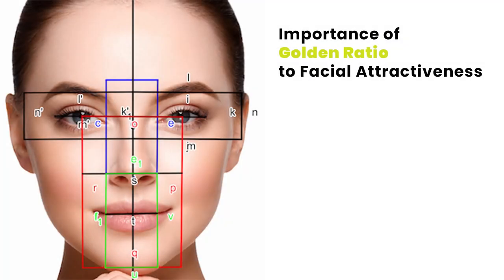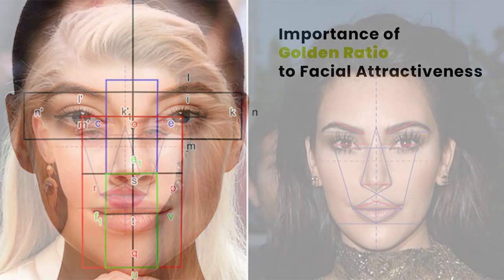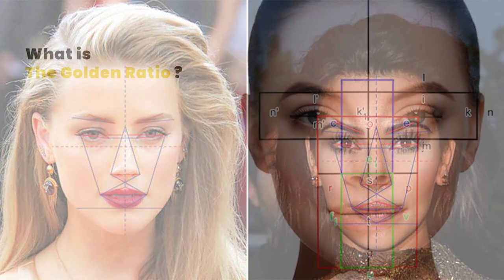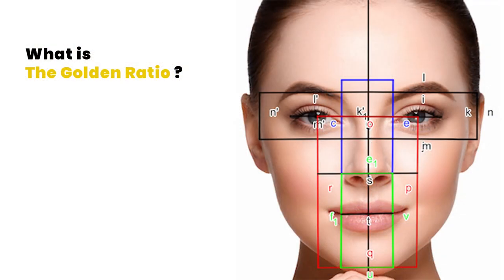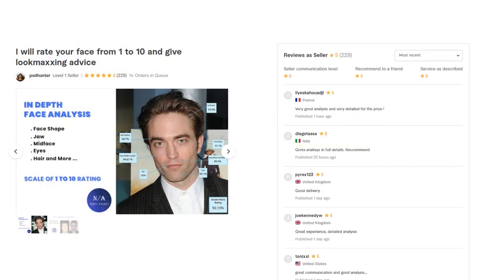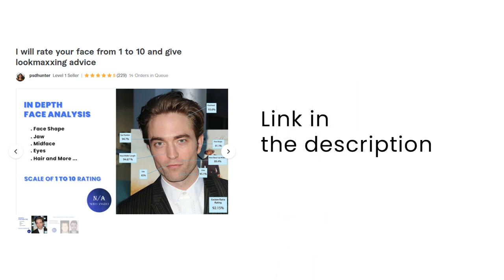I think everyone interested in facial attractiveness and face ratings has heard of the golden ratio at some point. It's a term that gets thrown around a lot, so I decided to discuss it today and give my opinion on it. We will be going over the meaning of the golden ratio and its history, how it can be used in determining if someone is attractive or not, and I want to give my opinion on how accurate it is. If you want a facial analysis done by me with personalized look-maxing advice, the link is down in the description.